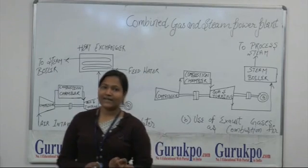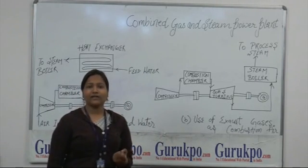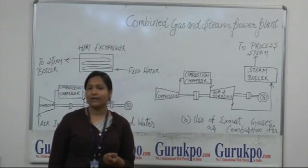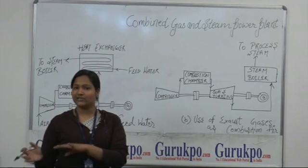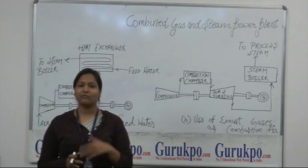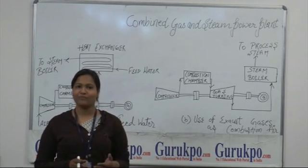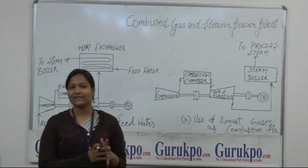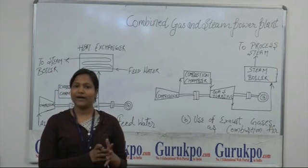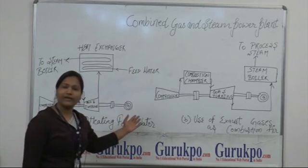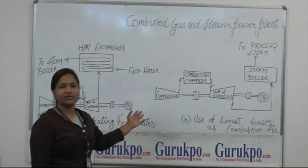Now basically in a gas power plant, what we do is we use the compressor to first compress the intake air. Compressed air is provided in the combustion chambers to raise its temperature. Now the hot and high pressure gas is expanded on the gas turbine, and that gas turbine is coupled with the generator where electrical energy is produced.